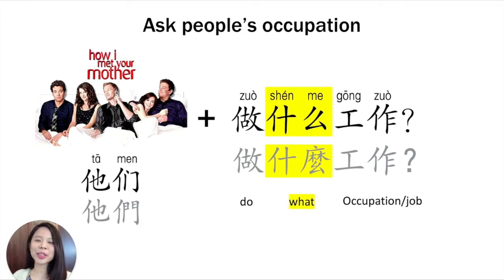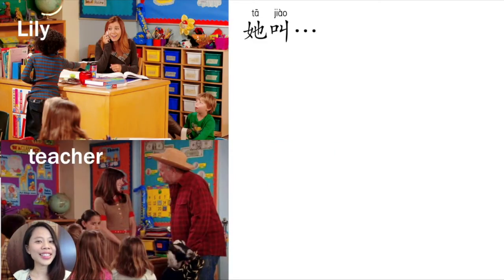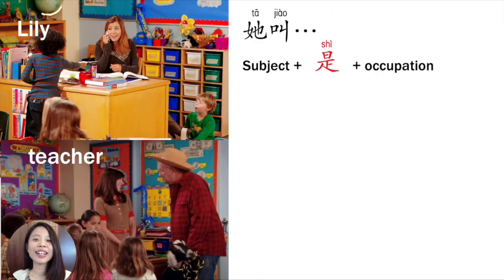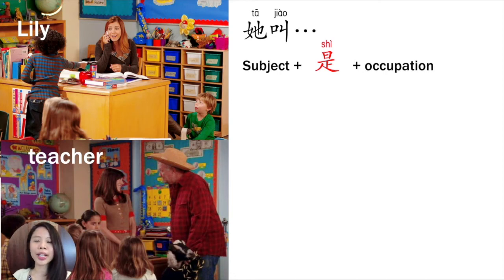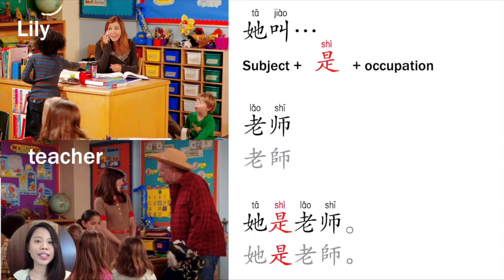他们做什么工作? 他叫Lily. 他是老师. So we can use this structure: Subject 是 plus occupation — 他是老师.